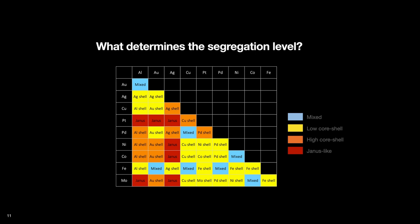So essentially, the question was what makes a certain metal more core preferring and the other more surface preferring.